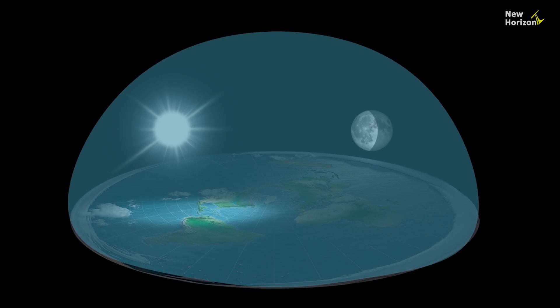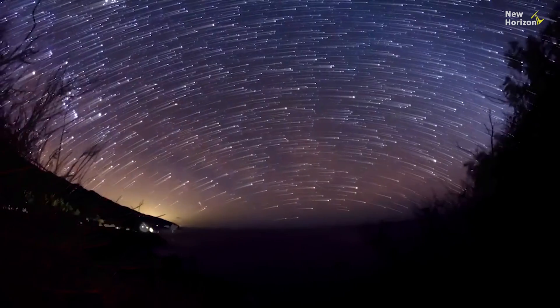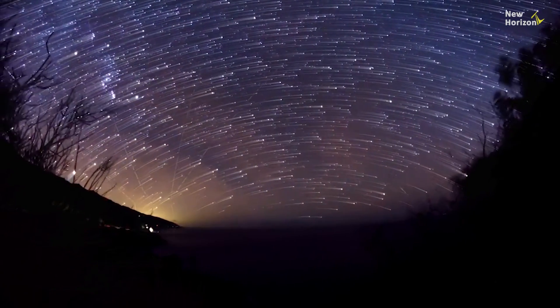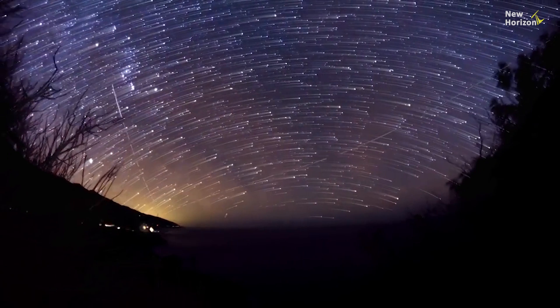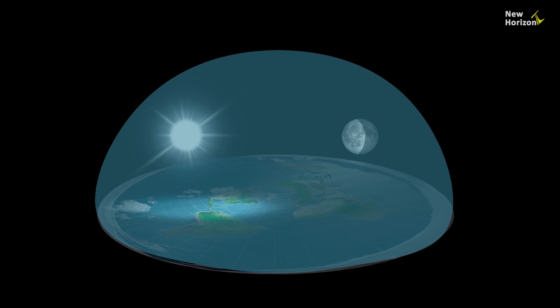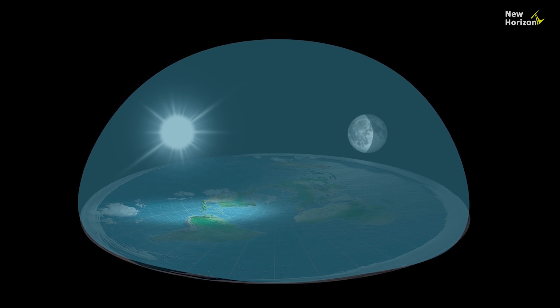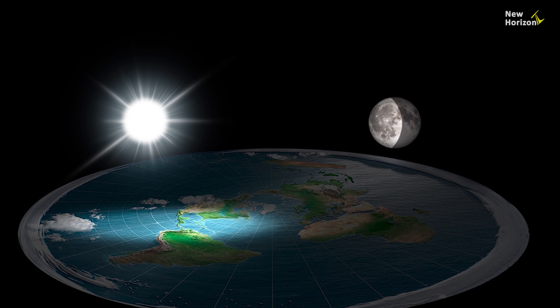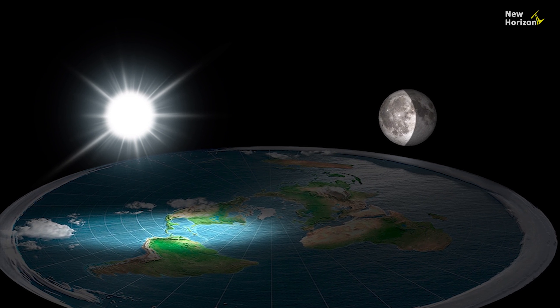If the Earth is covered by a dome, it's hard to say where meteoroids might come from. According to flat earthers, there are no other celestial bodies except the local Sun and Moon. They see all planets and stars as just tiny points of light.